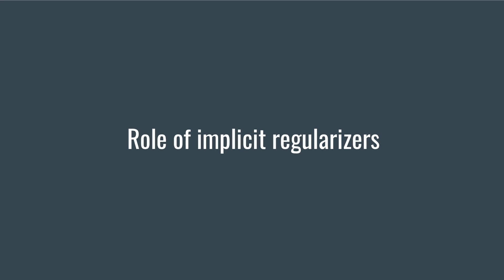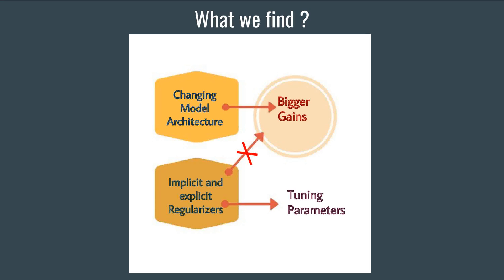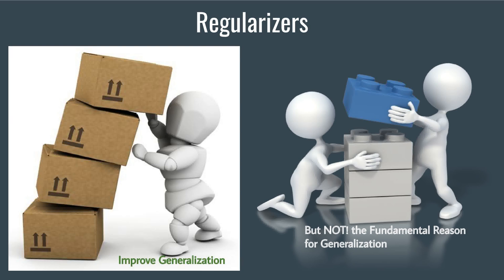To understand the role of implicit regularizers, they ran various tests and found that early stopping could potentially improve generalization on ImageNet but is not necessarily helpful on CIFAR-10, while batch normalization does improve generalization. They found that bigger gains could be achieved by simply changing the model architecture than by using an implicit or explicit regularization technique. They concluded that regularizers only help to marginally improve generalization performance but are not the fundamental reason for achieving it.